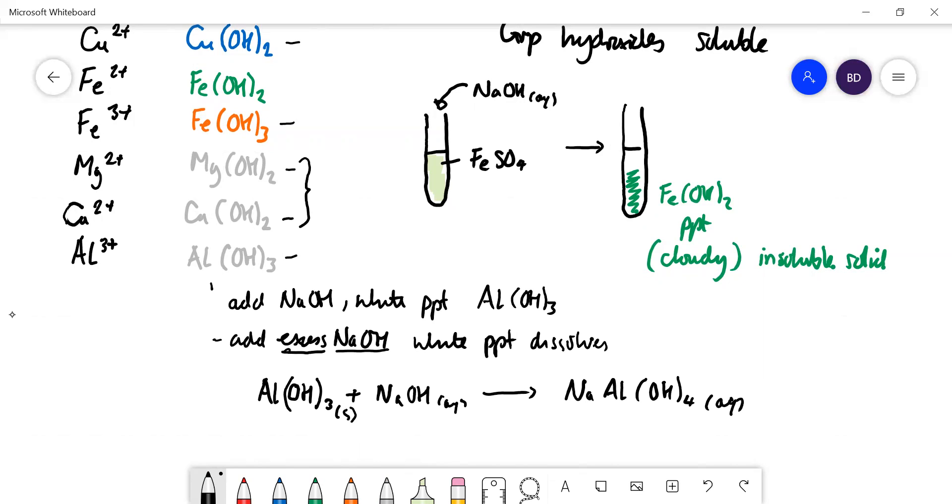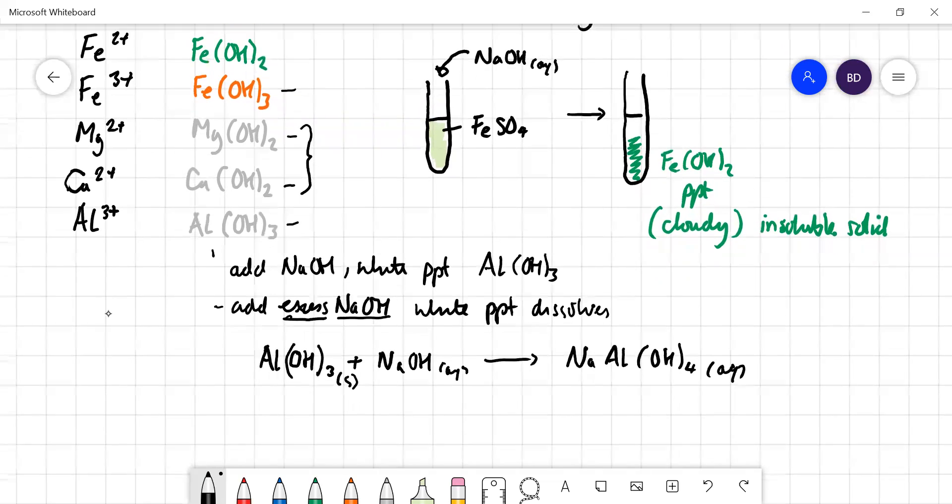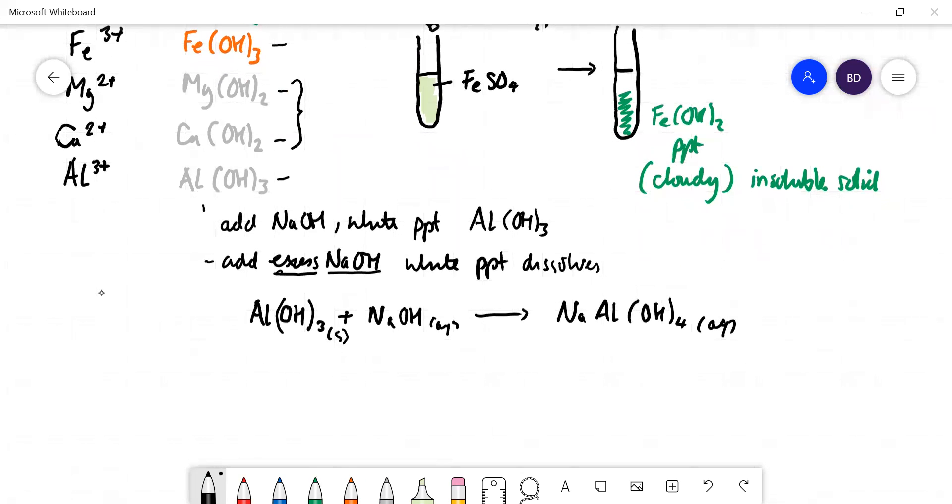This Al(OH)3 is a solid, so that's what redissolves. This sodium compound is an ionic compound made up of sodium ions in solution. This bit has to be negatively charged - this is called the aluminate ion: Al(OH)4 with a 1- charge on it.